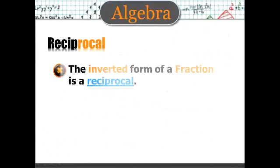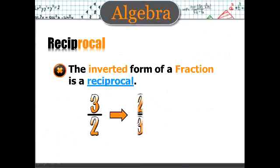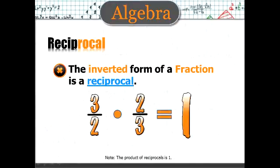A reciprocal is very important in algebra, and reciprocals are just the inverted form of a fraction. 2 thirds is the reciprocal of 3 halves. And here's what's really cool about reciprocals. When you multiply reciprocals, they equal 1. So the product of reciprocals is 1.